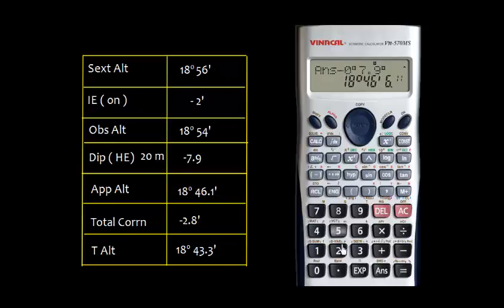And then you subtract minus 0° 2.8', so we get 18° 43.3'. The 0.3' is equal to 18 seconds.